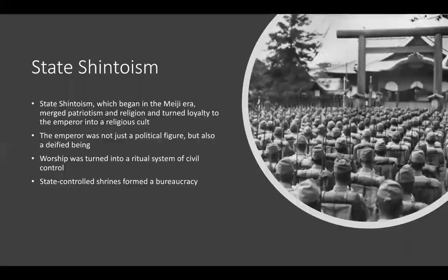State Shintoism began in the Meiji era, merging with patriotism and religion and turning loyalty to the emperor into a religious cult. The emperor was not just a political figure — he was also a deified being, believed to be a descendant of Amaterasu, the sun god, in Shinto beliefs. Worship was turned into a ritual system of civil control, and state-controlled shrines formed a bureaucracy for the government. You can see a picture of a shrine with soldiers in front of it.